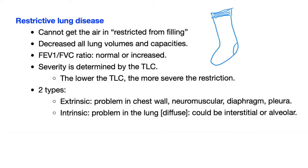What do restrictive lung diseases have in common? You cannot get the air in — your lungs are restricted from filling. My analogy is socks with a very strong rubber band that you put in the washing machine and it shrinks even more. It's very hard to expand these socks, but once you leave it, it's going to recoil on itself easily. In restrictive lung disease, you have a decrease in all lung volumes and capacities. FEV1/FVC ratio is normal or increased. This is how you diagnose a restrictive lung disease — that's step number one.